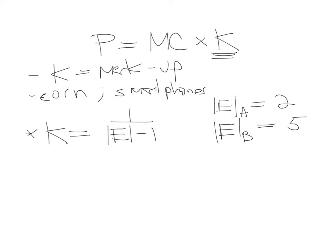So notice that company A is going to charge the following markup. This equation will be 1 over 2 minus 1. So this markup essentially is going to be equal to 1. And for the company with a price elasticity of demand of 5, the markup is going to be equal to 1 over 5 minus 1. So this is going to be equal to 1 fourth, which is about 0.25.